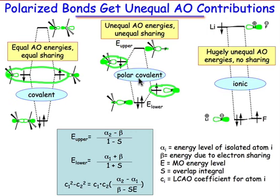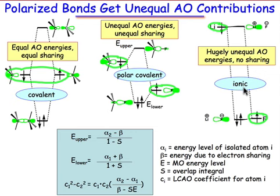In the last case, the energies are very different. We have a high-energy lithium 2s orbital combining with a very low-energy fluorine orbital. The result of these very different energies is no sharing — in other words, we have an ionic bond.